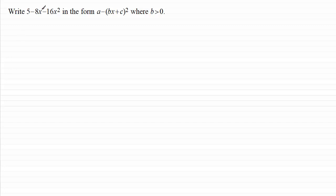Here you've got to write 5 minus 8x minus 16x squared in the form a minus (bx plus c) all squared, where b is greater than zero.